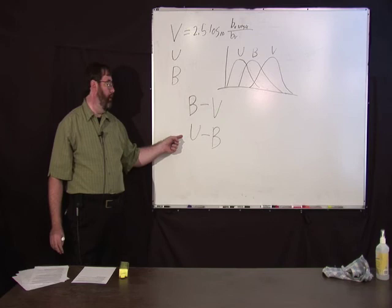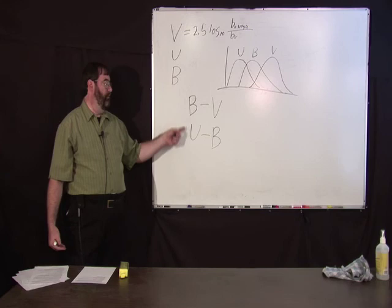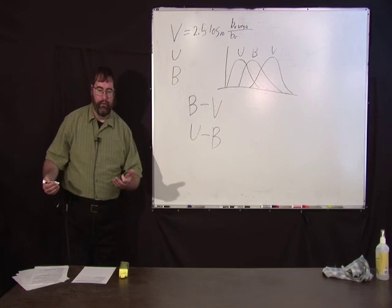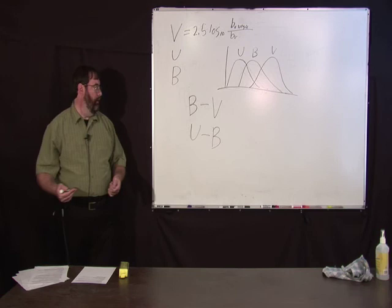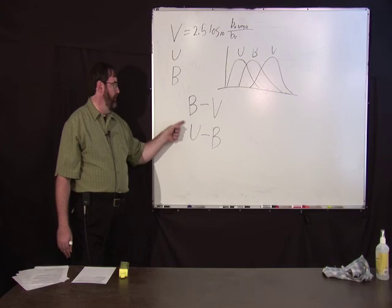So these differences here give some sort of indication of the temperature of the star. In fact, you can compute the temperature of the star as if it were a black body with these color indices. So you can tell which, if you're looking at two stars, you can tell which one's hotter, which one's bluer, which one's redder, temperature.